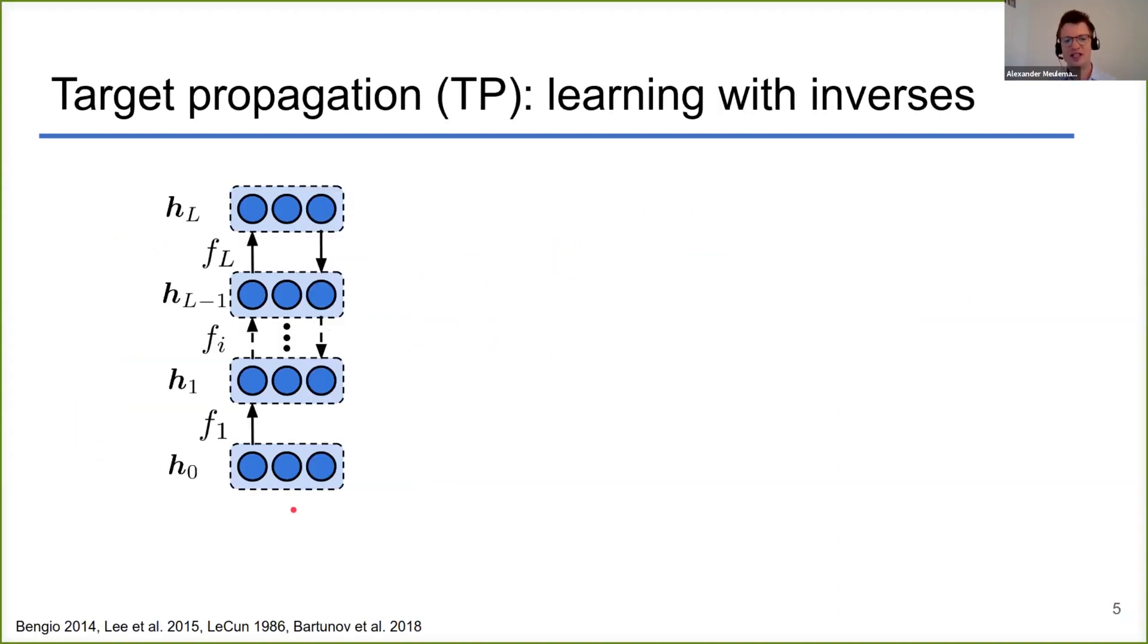Now, target propagation in its current form was introduced by Bengio a couple of years ago to solve the first two of these issues by propagating targets backward to your network instead of errors. So again, you have this feedforward phase in which you propagate an input to your feedforward neural network to the output. But then you will not compute an output error, but instead you will compute an output target.